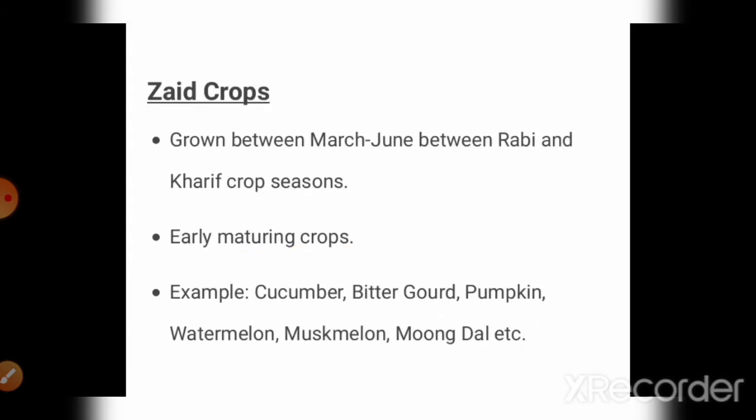The next is Zaid crop. Zaid crop is grown between Rabi and Kharif seasons and is a very short period crop — a short-term crop. Examples include cucumber and similar crops.